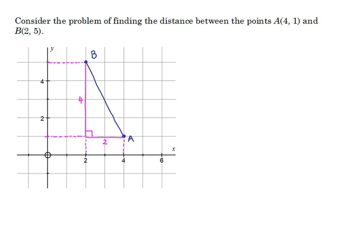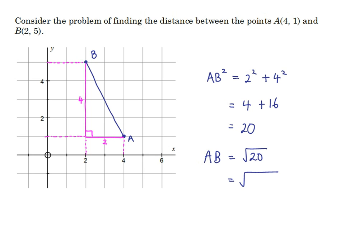So we use Pythagoras' theorem to find the distance from A to B. AB is the hypotenuse, so AB squared equals 2 squared plus 4 squared, which is 4 plus 16, so 20. Therefore AB is the square root of 20. Since 20 equals 4 times 5, we can write this as the square root of 4 multiplied by the square root of 5, giving a length from A to B of 2√5 units.